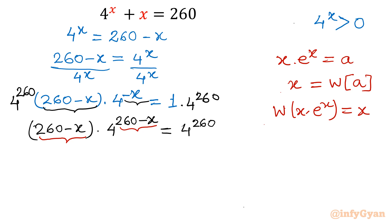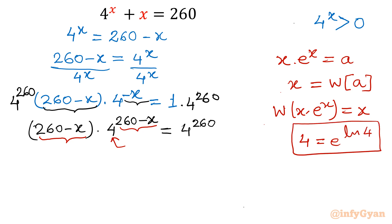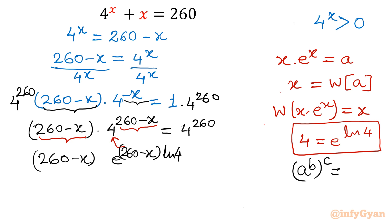The LHS will become directly 260 minus x, unless e is required here — but here the base is 4. So I will write 4 using a change of base: e raised to the power ln4. So the left-hand side will be converted into (260 minus x) times e raised to the power (260 minus x) times ln4. Because A to the power B, whole to the power C, can be written as A to the power BC — so we take the product in the exponents.